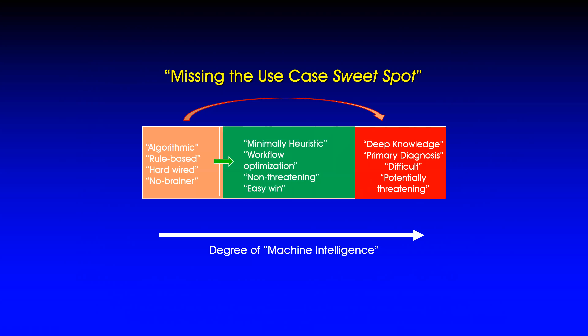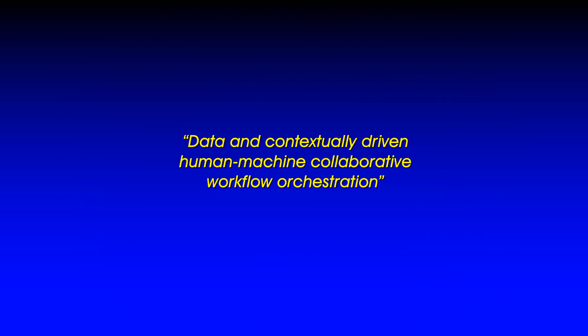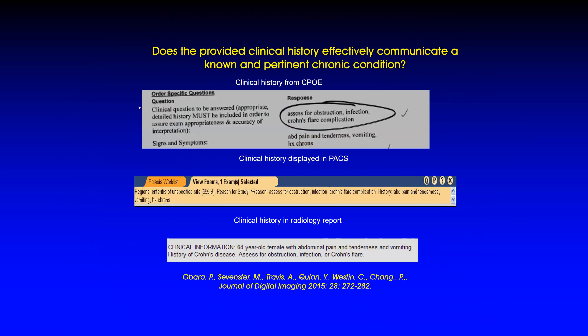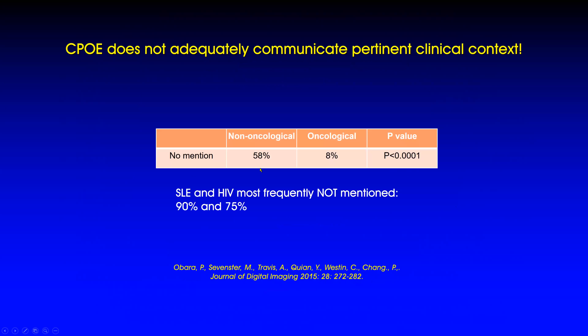A lot of people are making the mistake of leaping to very difficult use cases — diagnosis, replacing the radiologist — whereas the real sweet spot, as other industries have discovered, is using deep learning not to replace knowledge workers but to enhance them by reducing busy work and inefficiency. Most industries that have done this for years use machine learning for workflow optimization. The early must-have use cases in AI will address minimally heuristic workflow optimizations that reduce the busy work — data and contextually driven human-machine collaborative workflow orchestration.